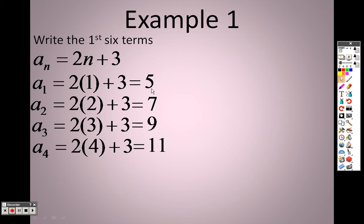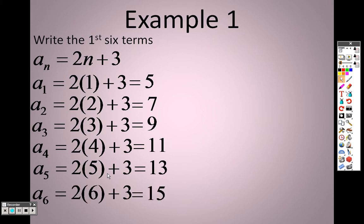You can already kind of see the pattern here: 5, 7, 9, 11. You can probably guess what the sum of the fifth term is going to be - the fifth term would probably be 13. And you can probably already guess the sixth term. When I plug in a 6, I end up with 15.